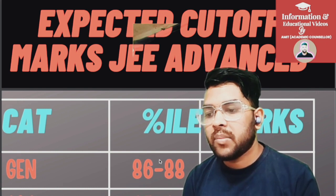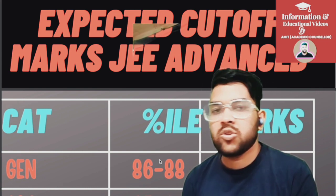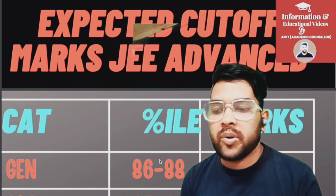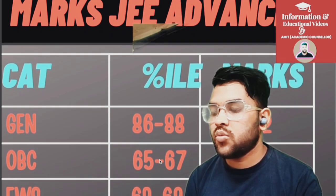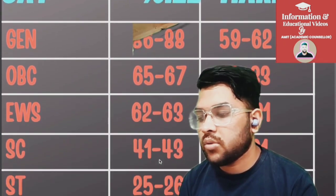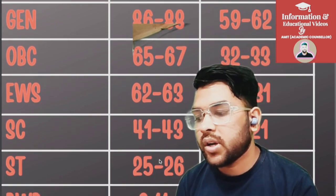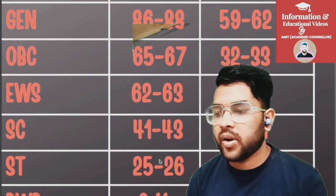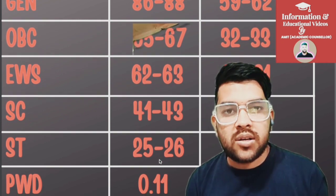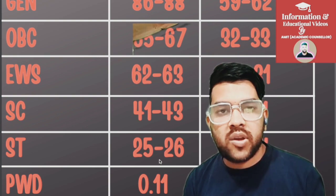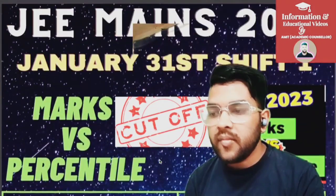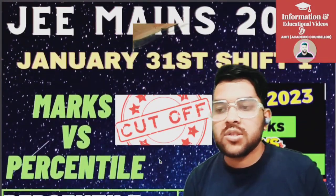Many students may be confused why I am providing the same percentile again and again. Percentile depends on the total number of students; marks depend on the type of paper — easy or hard. For General: 59 to 62. For OBC: 32 to 33. For EWS: 31 to 32. SC: 19 to 21. ST: 12 to 14. For PWD, if you have reached the center you are qualified for JEE Advanced. This is reality because the cutoff is very low — 0.11 percentile.